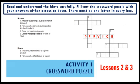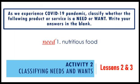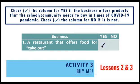For example, number 1 across: a facility supplying a public or market demand. The answer is 'service.' Activity 2: Classifying Needs and Wants. As we experience the COVID-19 pandemic, classify whether the following products and services are needs or wants. Write your answers in the blank. For example, number 1: nutritious food. If you think this is a need, write the word 'need' before the number.